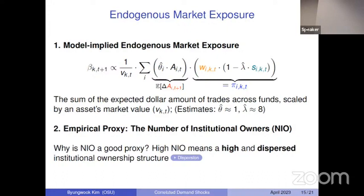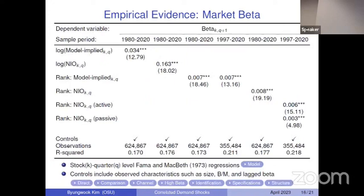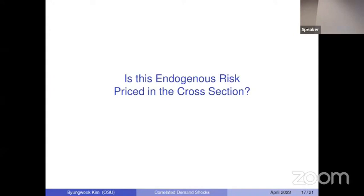The model tells me that betas are a positive function of model-implied exposure. Running a stock-quarter level fixed-effect regression where the Y variable is market beta, I find a positive relationship between market exposure and stock exposure to correlated demand from benchmarking. The economic magnitude is sizable: an interquartile range increase in model-implied exposure leads to a higher market beta of 0.35, which is very large.